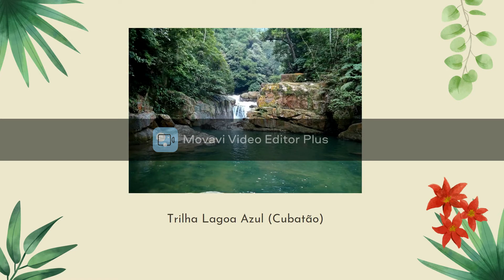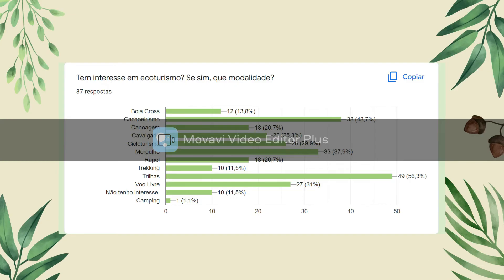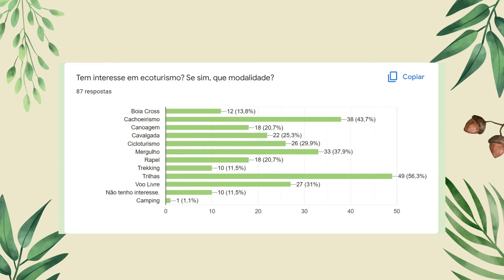Indo para a parte de coleta de dados da nossa pesquisa, nós utilizamos o Google Forms como ferramenta para a coleta dos dados. Tivemos um total de 87 respostas. Para identificar a demanda, começamos perguntando sobre o interesse no ecoturismo e as modalidades de interesse. Podemos ver que a maioria do interesse está em cachoeirismo e trilhas — são as áreas que devemos investir, pois foram as de maior interesse dentro das 87 respostas.